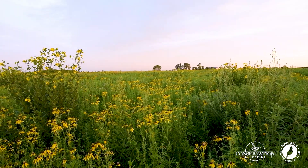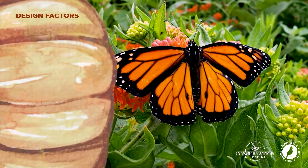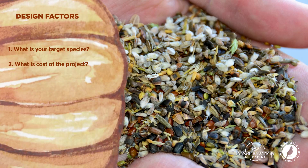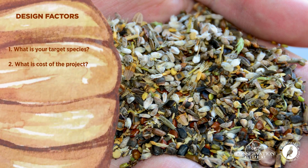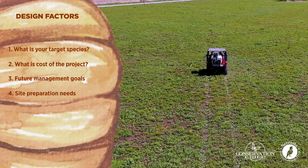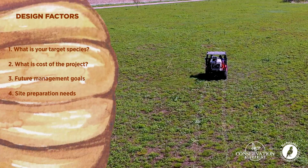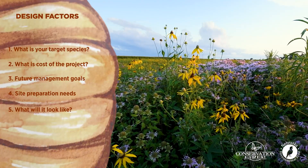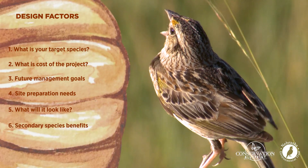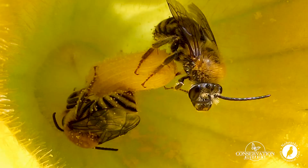When we're designing a project, I suggest that you consider six factors. One, what's your target species and what are their specific habitat needs? What is going to be the cost of the project and what is your budget? What future management activities are you planning to apply to the project? What kind of site preparation is needed? How about visual appeal — do you want the project to look real flowery and showy? And the last factor is what are the secondary species that we can benefit with your project by thinking about them on the front end, like the squash bee in our pumpkins.